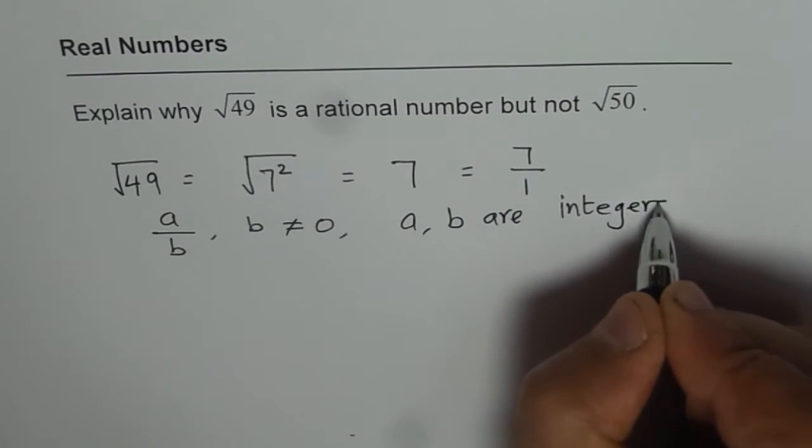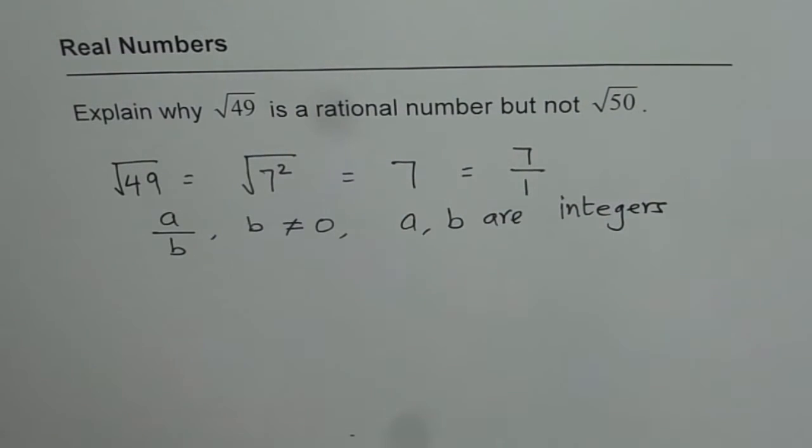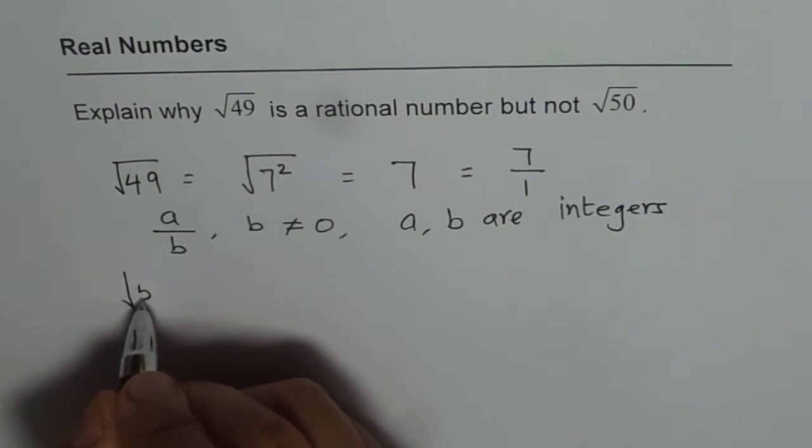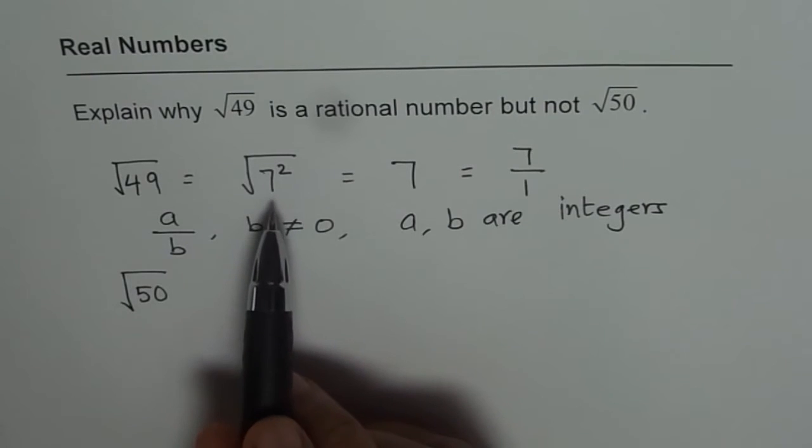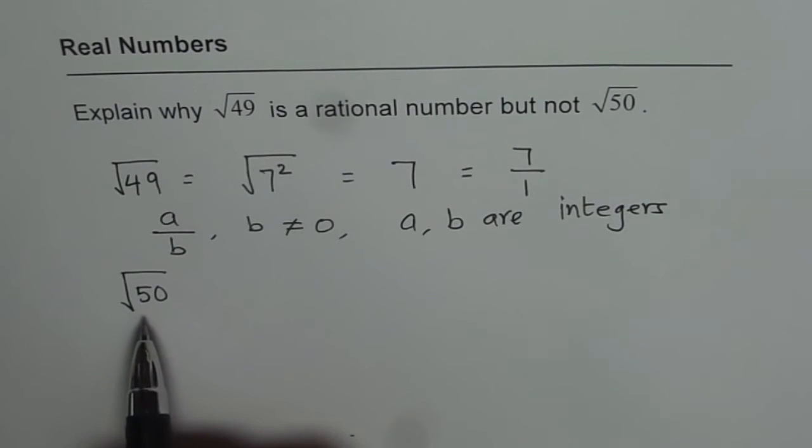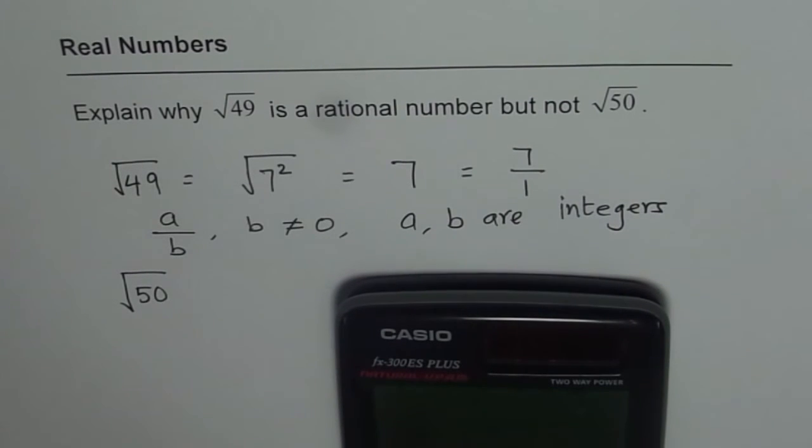That is how we define rational numbers. How about square root of 50? Since 50 is not a perfect square, we cannot find any whole number whose square will be 50. If we use a calculator and say, what is square root of 50?